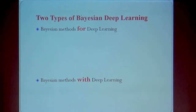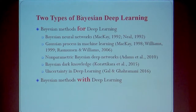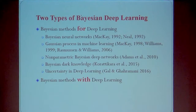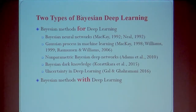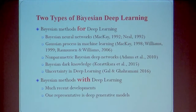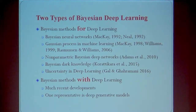In general, there are two types of this kind of method. The first is using Bayesian methods for deep learning — for example, Bayesian neural networks as done maybe 20 years ago — to protect the neural network from overfitting. There are also connections with the Gaussian process and recent work on using nonparametric Bayesian methods for deep learning and to characterize uncertainty. But there is also another type: using deep learning to build better Bayesian models, and this is what I will focus on more in the rest of the talk.